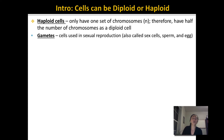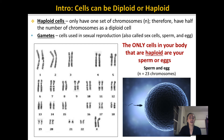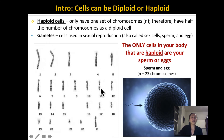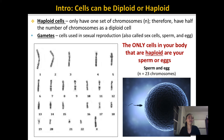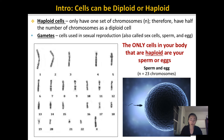Gametes are found in your reproductive organs — either your testes or your ovaries. If we were to look inside the ovaries of a female, you would find eggs that, instead of being diploid with two sets of chromosomes, each egg only has one set of chromosomes. This makes sense because whenever you have offspring, you're only giving them half of your genetic information. That's why gametes have to be haploid.